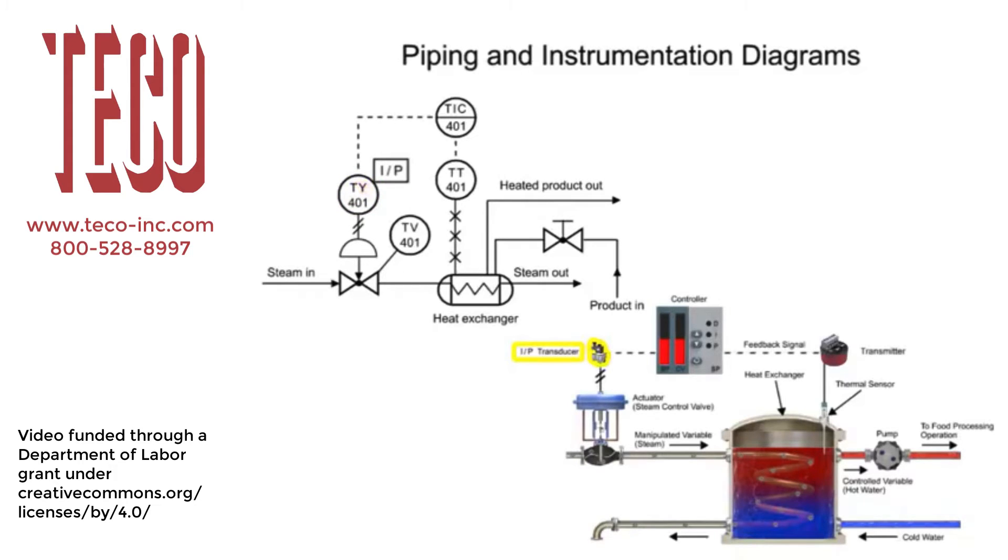The transducer converts an electronic signal to a pressure signal and is indicated by the square containing the letters I and P. The line with diagonal marks designates a pneumatic connection. The pneumatic controlled diaphragm actuator that opens and closes the globe valve regulates steam in the process. The actuator is represented by the half circle in the P and ID.